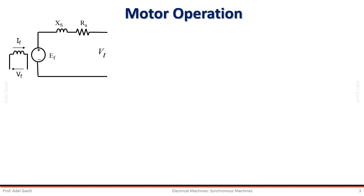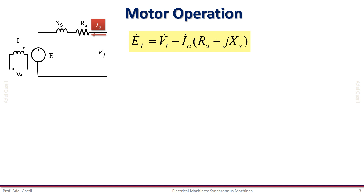The difference between generator and motor operations in the equivalent circuit is in the direction of the armature current. In the motoring operation the armature current direction is going inside the armature, while that of a generator is leaving the armature. The equation of the induced back EMF is obtained from the KVL as shown here. The main difference between generator and motor operation is mainly the minus sign of the armature current, as shown here.